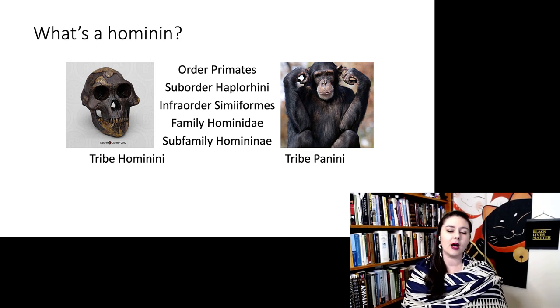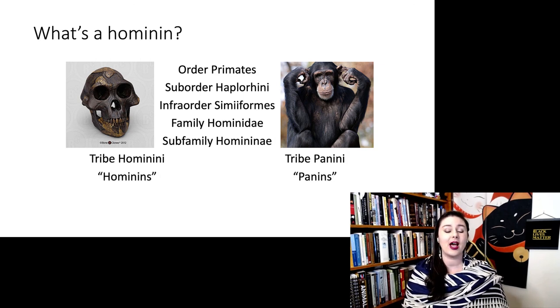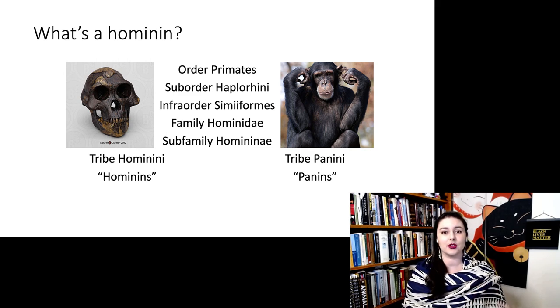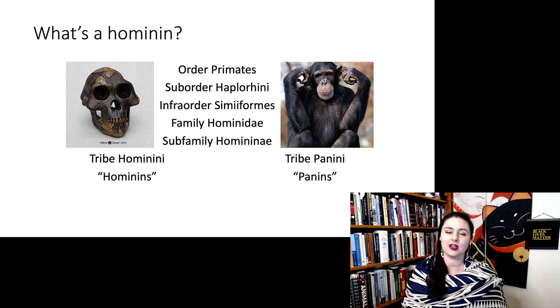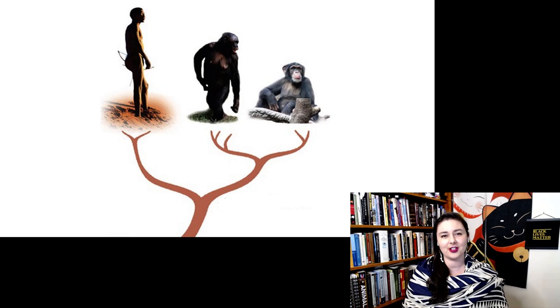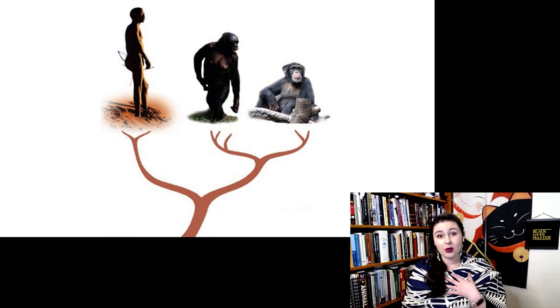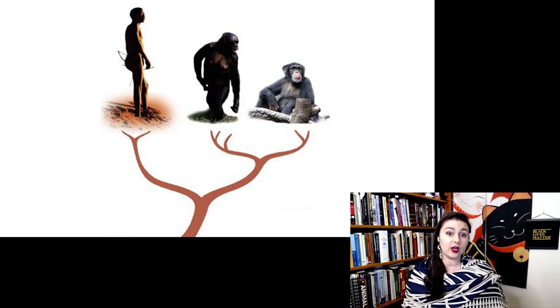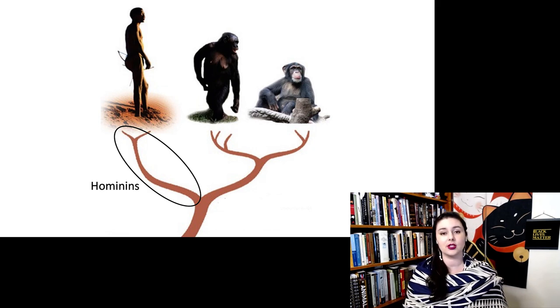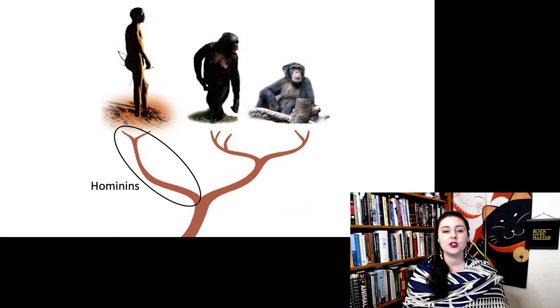So you'll hear hominini and panini, but more commonly you're going to see the colloquial versions of these words as hominins or panins. So a hominin is something that's more closely related to us than it is to chimpanzees. We can also visualize this on a phylogenetic tree because right now if we're only looking at modern species, we are the only hominin that exists and there's two different panins here. But when we're looking at the fossil record, anything that's on that branch that is more closely related to us than it is to chimpanzee is a hominin.